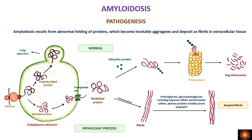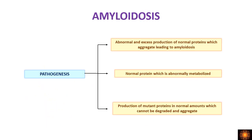Looking at pathogenesis, the deposited misfolded protein falls into three categories: either excess production of normal proteins that aggregate leading to amyloidosis, or a normal protein that is abnormally metabolized and gets deposited, or a mutant protein that cannot be dissociated or disaggregated and starts accumulating.